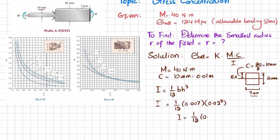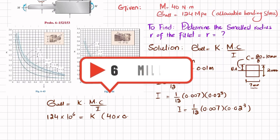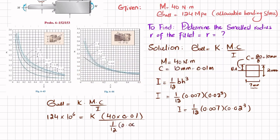We now apply the allowable bending stress formula: σ_allowable = k × M × c / I. The allowable bending stress is 124 megapascal, so: 124 × 10⁶ = k × 40 × 0.01 / [(1/12) × 0.007 × (0.02)³].